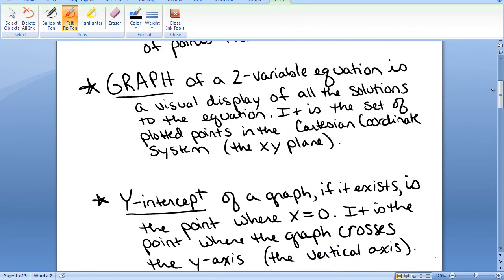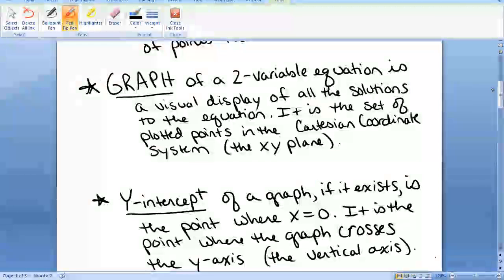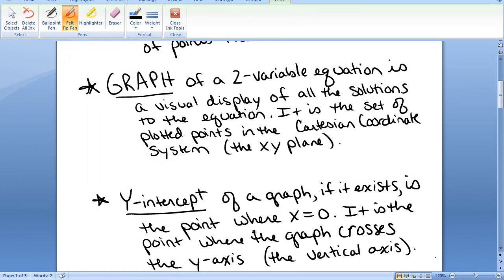The graph of a two-variable equation is a set of all of those solutions displayed in the XY plane. So, since there are an infinite number of solutions, we obviously can't find every single one. So, we find enough of them so that we identify the pattern of the graph. We plot some of those points, and we identify the pattern and kind of fill in the holes.